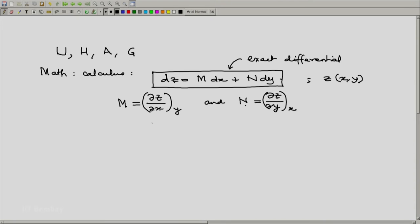That means, whether you take the second partial derivative of z, first with respect to x at constant y and then with respect to y at constant x, this should equal the second derivative of z, first with respect to y and then with respect to x.